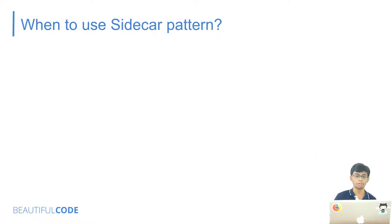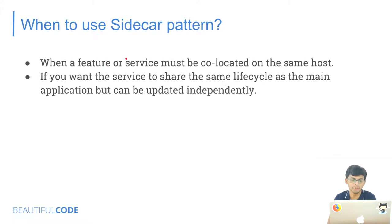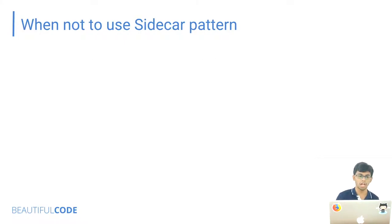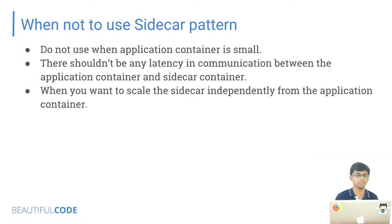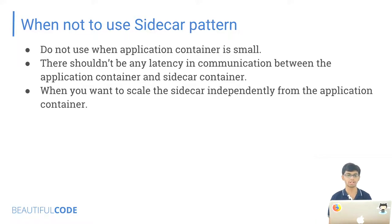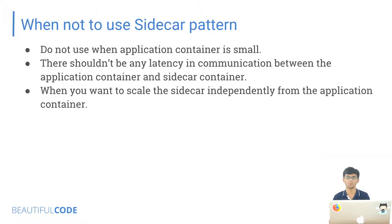When to use the sidecar pattern: when a feature or service must be co-located on the same host, or when you want a service to share the same lifecycle as the main application but can be updated independently. When not to use it: when your application container is small, it doesn't make sense to maintain a separate container. Also, when latency between the application container and sidecar container is really critical — if you need near-zero latency, you shouldn't go with this approach.